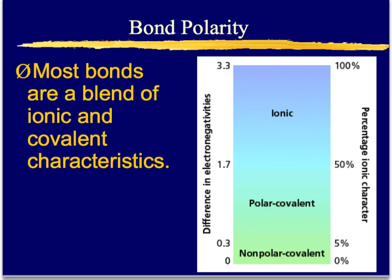In class, we mostly discuss bonds as being either ionic or covalent, but we do that for convenience. Most bonds are actually a blend of ionic and covalent characteristics. Bonds can be ionic, where we are transferring electrons; polar covalent, where we're still sharing electrons but there's an uneven distribution; and nonpolar covalent, where the electrons are shared equally.